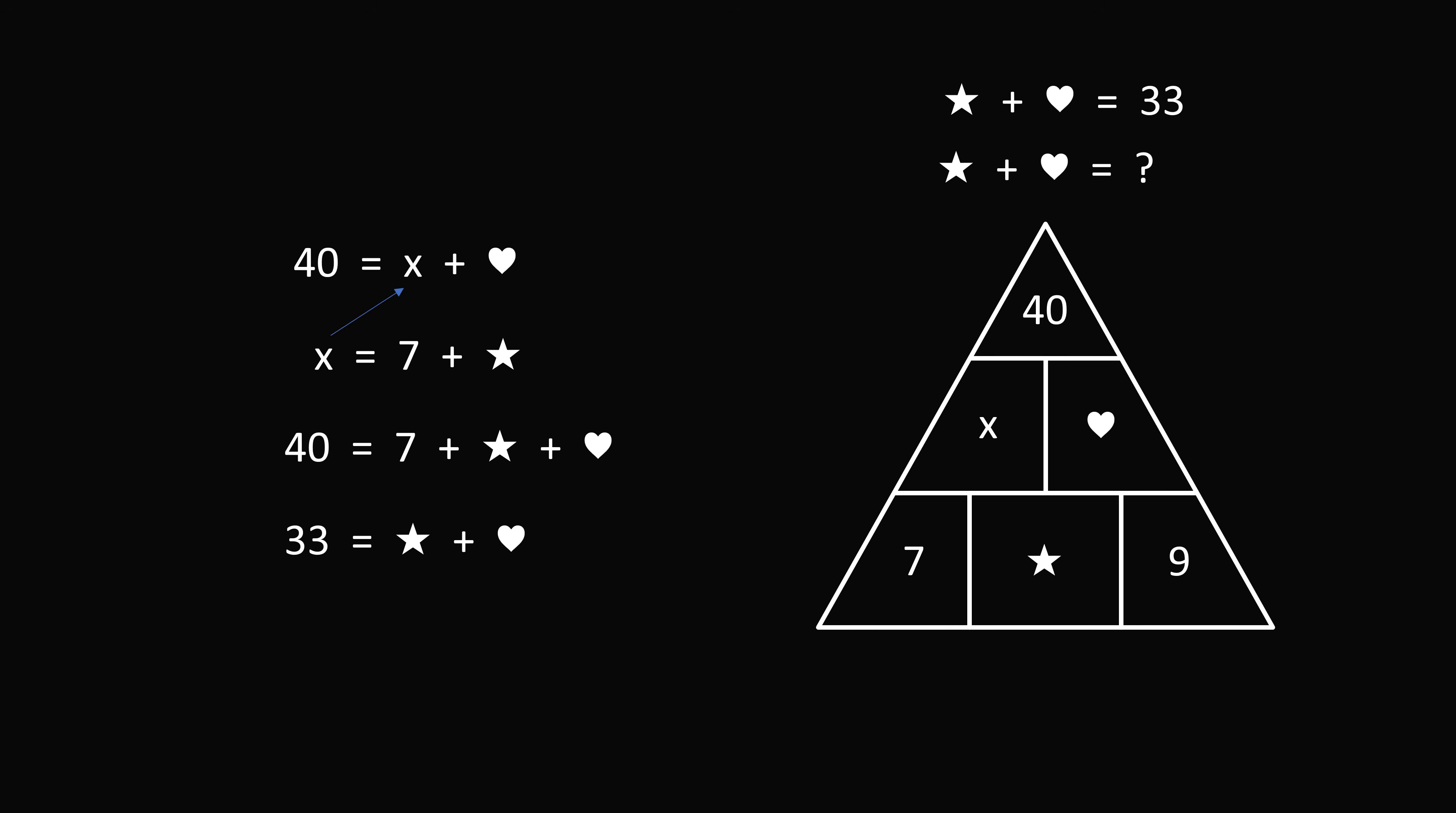And therefore, star plus heart is equal to 33. Now the astute viewers will notice this is exactly the pattern that was guessed at the beginning of the video. We had heart plus star will be equal to the value of this top number minus this bottom left number. So star plus heart is exactly equal to 40 minus 7, which equals 33. So I was quite delighted to see that this pattern that I just guessed did turn out to be the correct way to solve the problem.